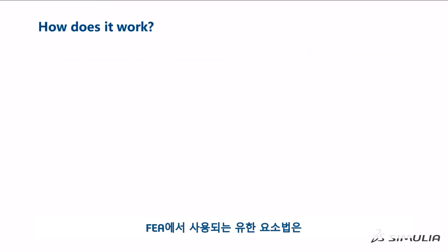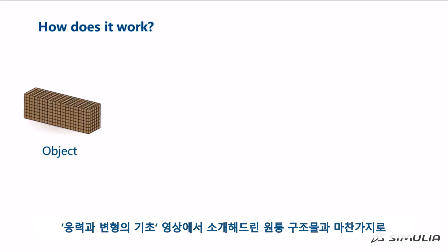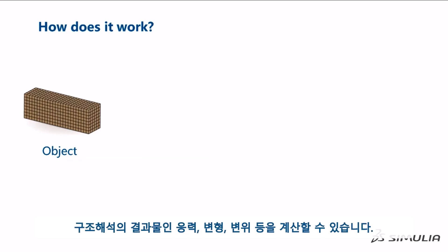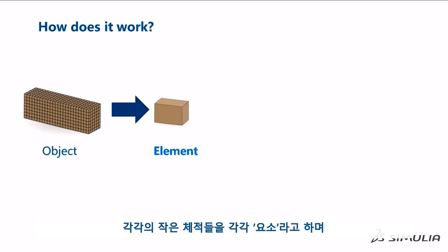The finite element method, which is used by FEA, starts by dividing an object into a finite number of small volumes. Similar to the cylinder that we introduced in the Basics of Stress and Strain video, these small volumes have a simple shape which allows us to easily calculate quantities like stress, strain, and displacement. We call the process of creating these small volumes meshing the object.